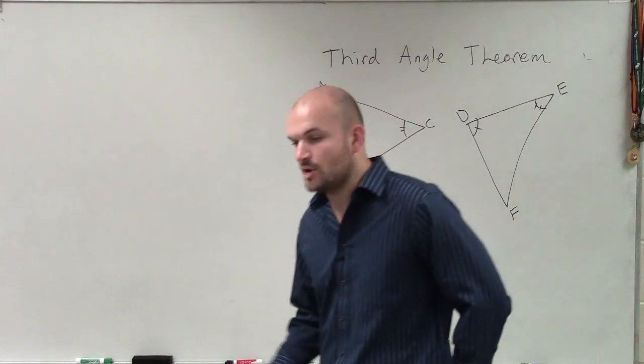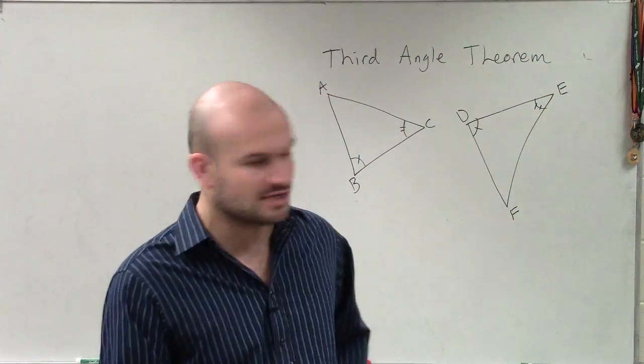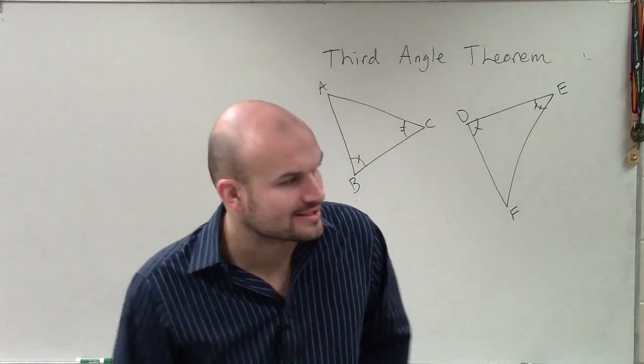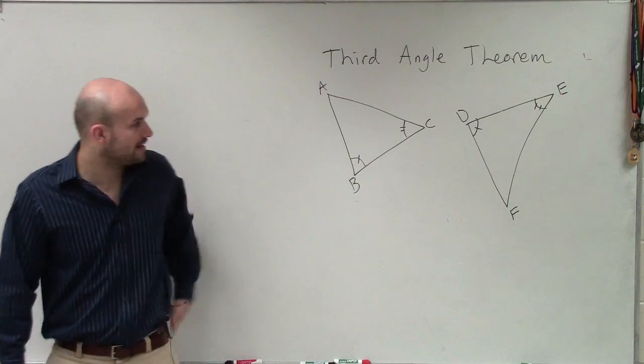we have the understanding that the sum of all the angles in a triangle adds up to 180 degrees. So let's look at these two triangles.